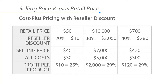If the retail price is $700 and we're providing a discount to the reseller of $280, our selling price to that retailer or distributor is $420. If all our costs are $300, then that leaves us with $120 of profit per product, which represents a 29% profit of the selling price.